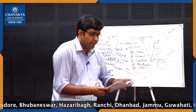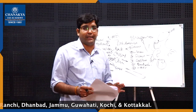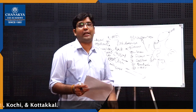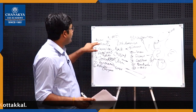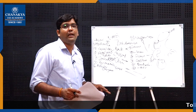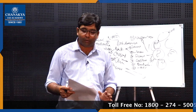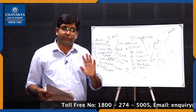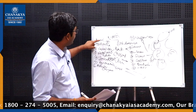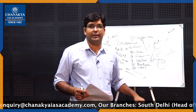For example, the question: write a short note on management of a case of aluminium phosphide. Since this question is just about management, write about the management portion only. But if the question is 'write a short note on aluminium phosphide poisoning,' then you have to write in the full order: mechanism of action, fatal dose, fatal period, clinical examination, post-mortem findings, medico-legal aspect, and management — in this order.